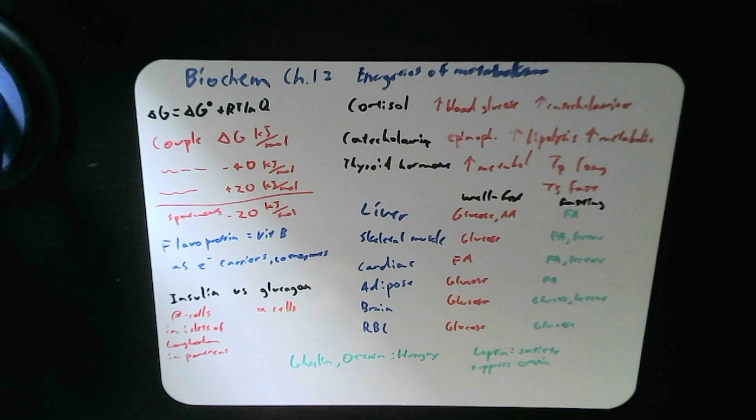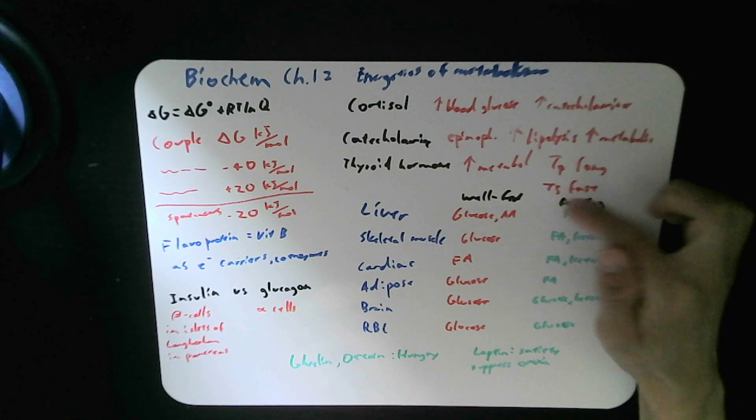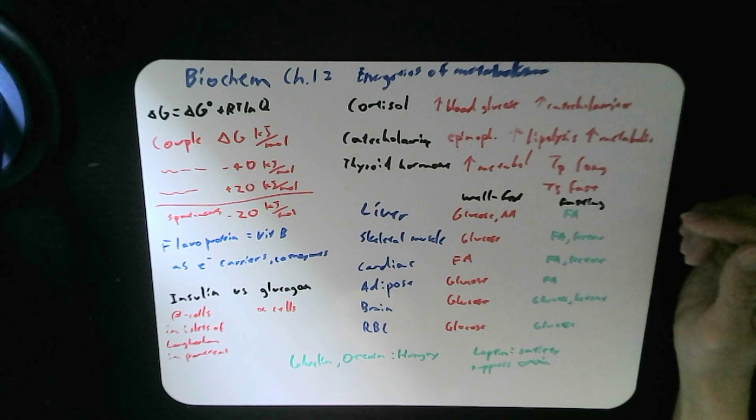Your thyroid hormone also increases your metabolic rate. You have T4 and T3. T4 takes a longer time to act but holds for longer. T3, thyroid 3, which has three iodine molecules attached to it, is fast acting and only temporary.